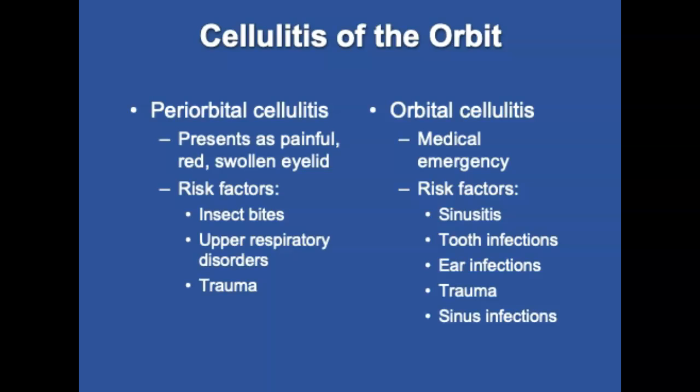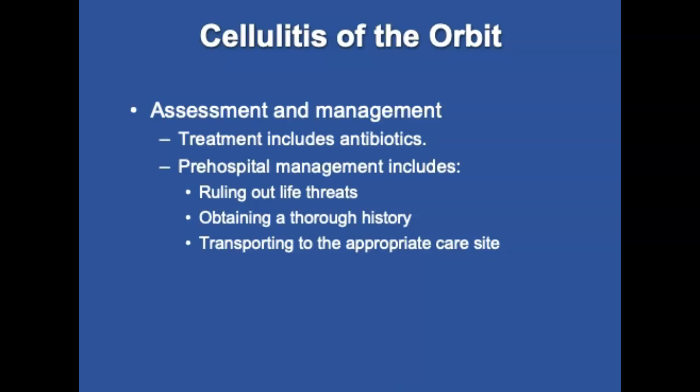Cellulitis of the orbit — paraorbital or orbital cellulitis — is more prevalent in children than adults. It's known as eyelid cellulitis and presents as a painful, red, swollen eyelid. Predisposing factors include insect bites, upper respiratory disorders, or trauma. Orbital cellulitis is an infection within the eye socket and is a medical emergency — the goal of treatment is to avoid abscess formation. Risk factors include sinusitis, tooth infections, facial or middle ear infections, trauma, or sinus infections. Treatment in children is usually IV antibiotics; adults are generally treated with oral antibiotics. Pre-hospital management includes ruling out life threats and obtaining a thorough history.